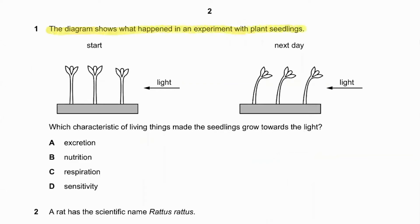Question number one: the diagram shows what happened in an experiment with a plant seedling. We have a unidirectional light, and the next day we see the plant is bending towards that light. Which characteristics of living things made the seedling go towards the light? Plants are sensitive towards light — they sense light, which shows phototropism, and move towards that light. So sensitivity is what the plant is showing. 1D is the answer.